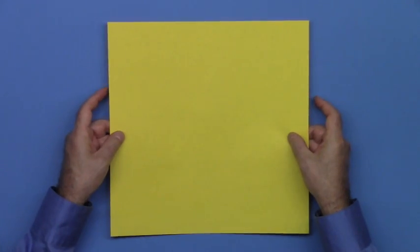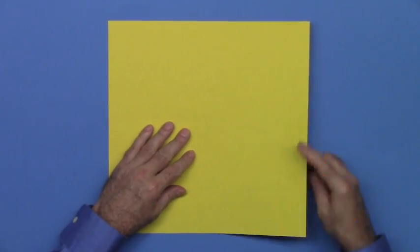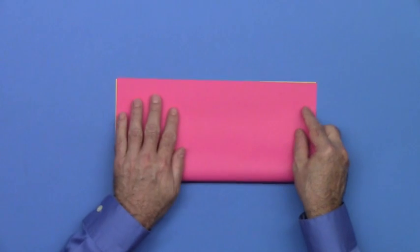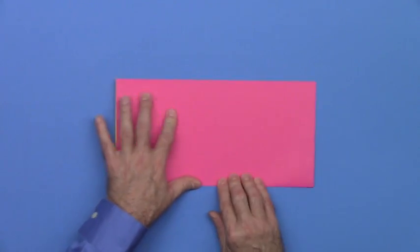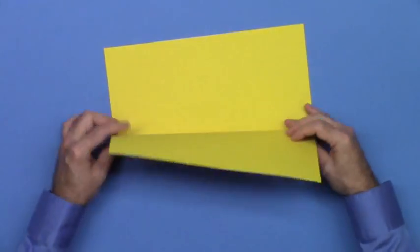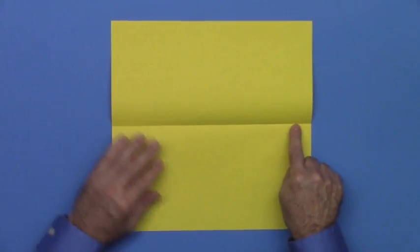Begin with the minor color of your choice facing up. Fold in half bottom edge to top and unfold. Here we have a horizontal center crease.